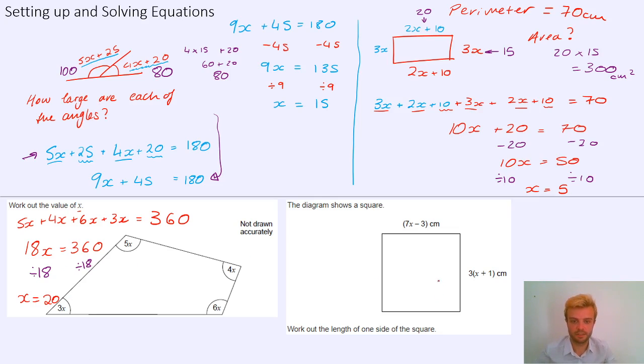This one on the right-hand side is a little more complicated. We need the length of one side of the square. Now we've been given two different sides of the square, and what do we know about squares? Their sides are the same length. So that means that this first length across the top, 7x minus 3, equals the other length, which is 3 lots of x plus 1. So those are equal to each other, and now I have an equation that I can solve.